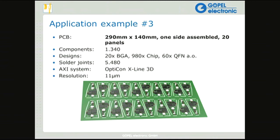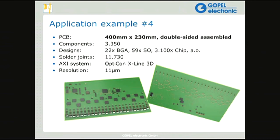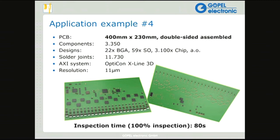Application example 3: a panelized board, 290mm × 140mm, single-sided, 20 panels, with 1,340 components — 20 BGAs, 980 chips, 60 QFNs, and 5,480 solder joints. Inspection time at 11 microns: 41 seconds. Application example 4: a large PCB, 400mm × 230mm, double-sided, with 3,350 components — 22 BGAs, 59 SOICs, 3,100 chips, and 11,730 solder joints. 100% inspection at 11 microns in 80 seconds.